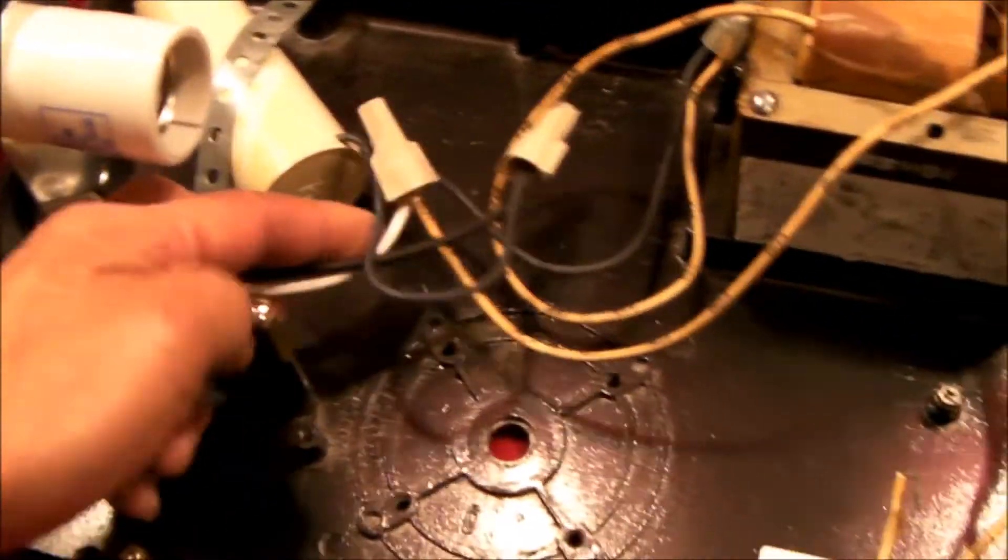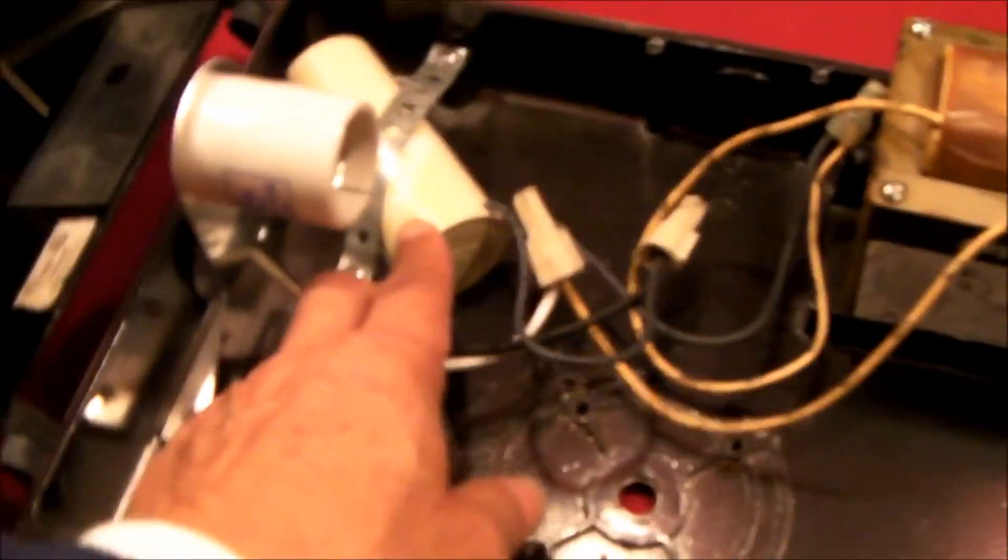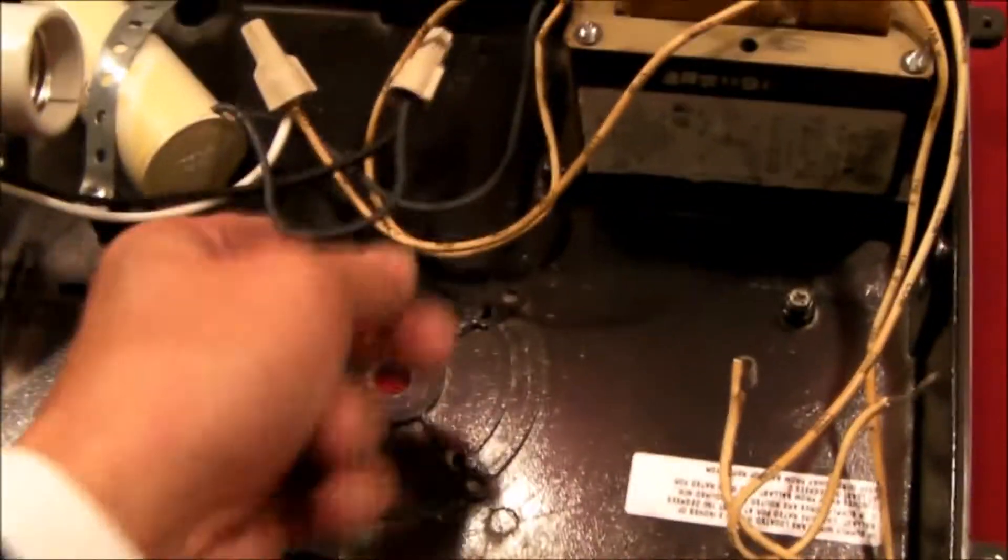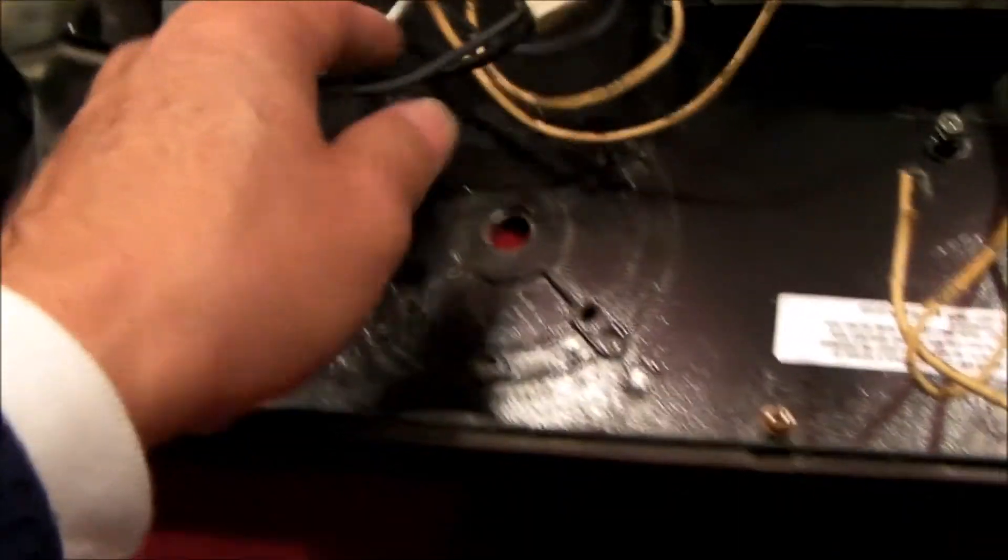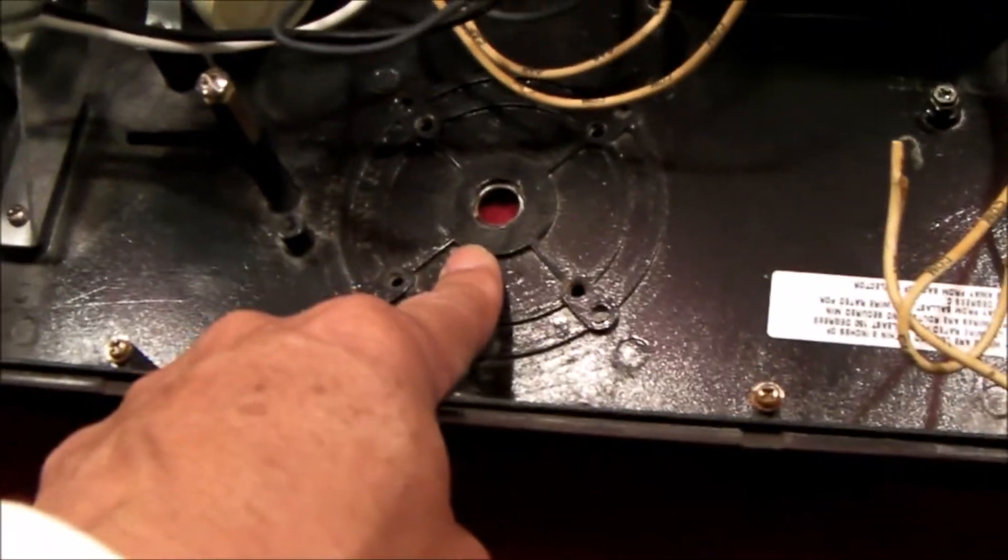There are a lot of videos out there on how to convert these metal halide fixtures to LEDs, so I'm not going to waste your time talking about that. But the bottom line is I'm just going to remove the capacitor, the ballast, and direct wire the black and white wires that come off the socket straight to the incoming power.